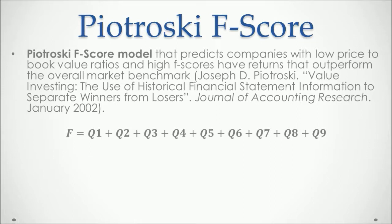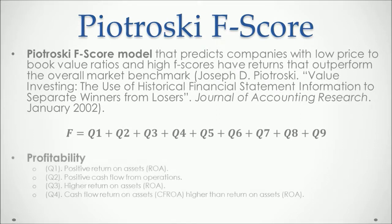The F-score is the sum of nine questions, each scored as either one or zero. Questions one through four are related to profitability. In question one, if the return on assets of the current period is positive, the score is one; if not, zero. This one-zero scoring applies to all nine questions.